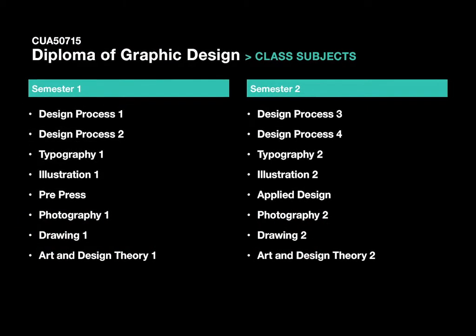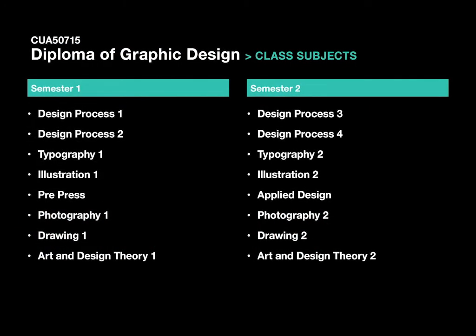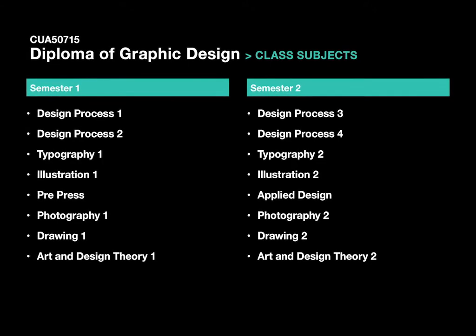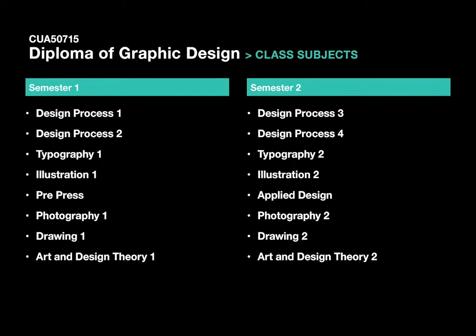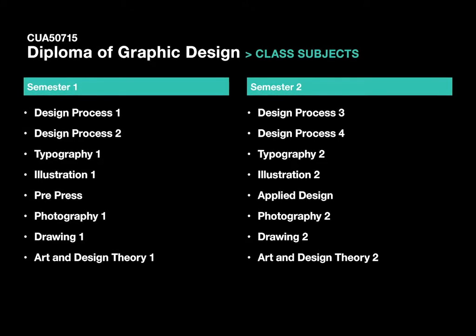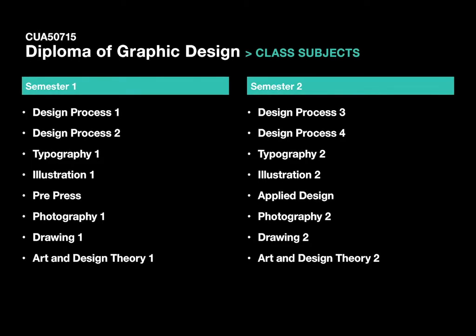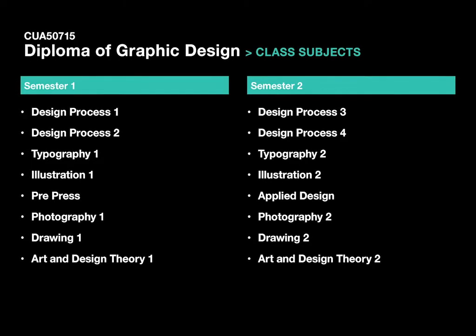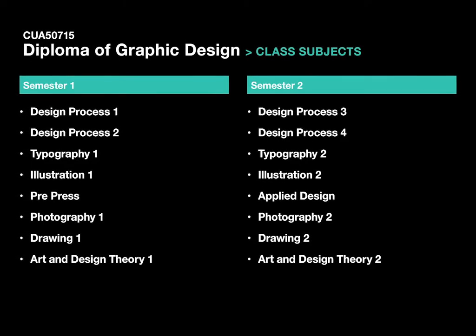Here's the class list for our Diploma of Graphic Design. Design Process classes 1, 2, 3 and 4 are our general design classes. General design projects like flyers, branding, advertising and posters all fit nicely into Design Process 1, 2, 3 and 4.